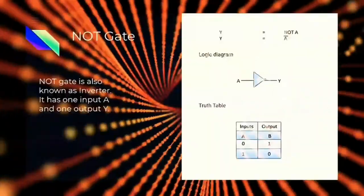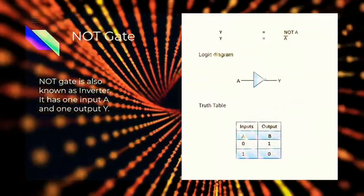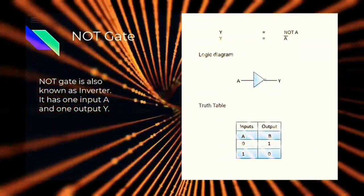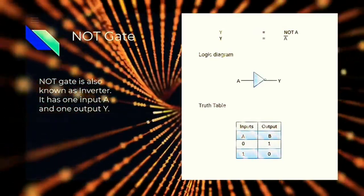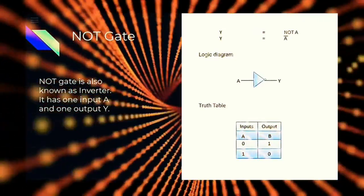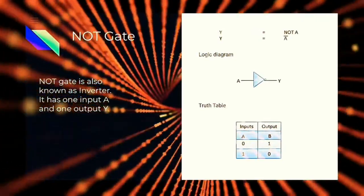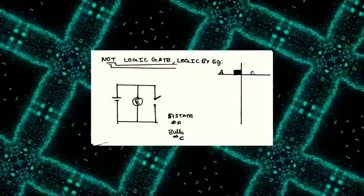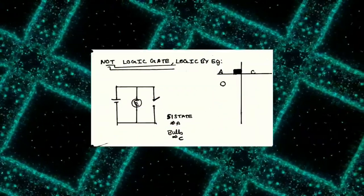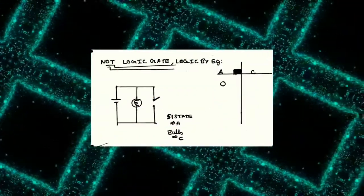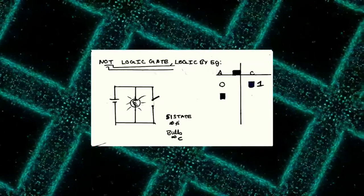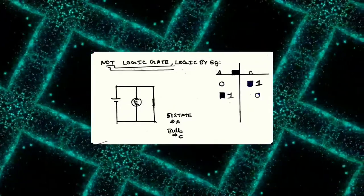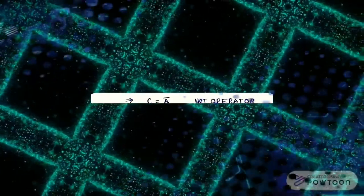NOT gate: The NOT gate is also known as an inverter. It has one input A and one output Y. When A equals zero, the output C equals one, and vice versa. Therefore, C equals NOT A (A-bar).